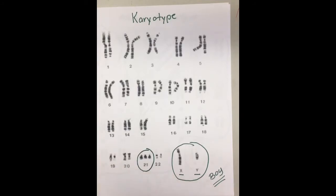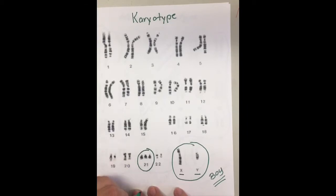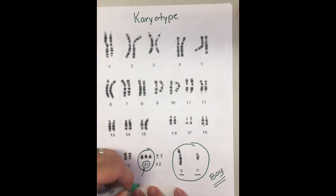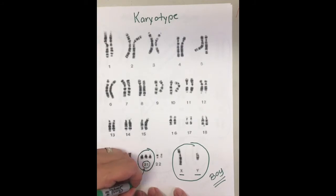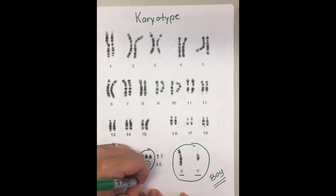Here's an example where a person inherited an extra chromosome. Instead of having just two, this person has three chromosomes of the same size and same shape. This is specifically common with the 21st pair. When this happens, the person ends up having a condition called Down syndrome, which most of you are probably familiar with.